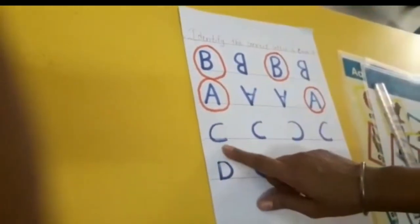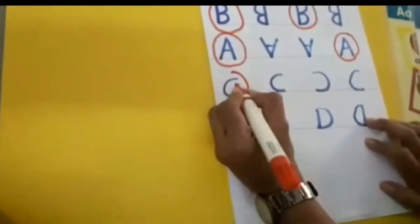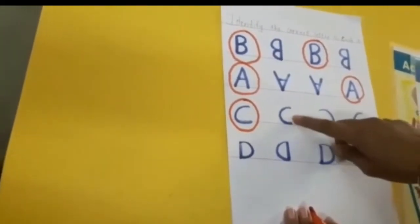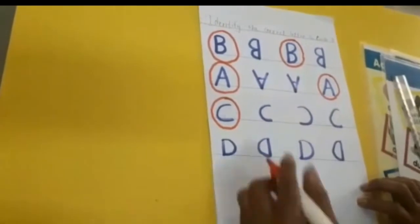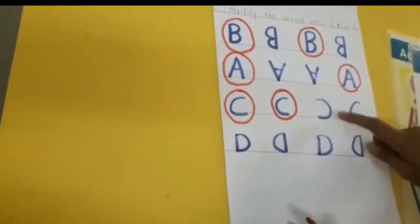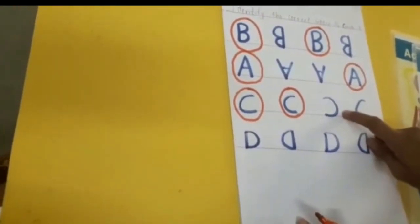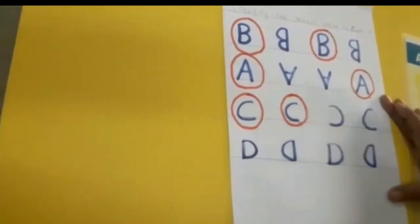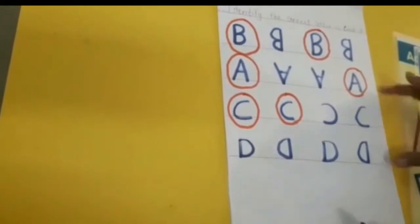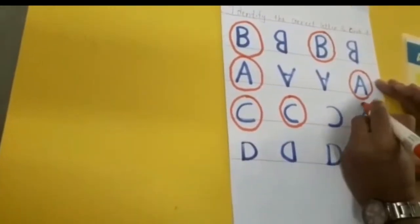Now let's see letter C. Which letter is this? C. This is C — is it proper? Yes, so we will circle on this letter C. This is also C, but is it proper? No. And this is also C — is it properly written? Yes, so we will circle here again.